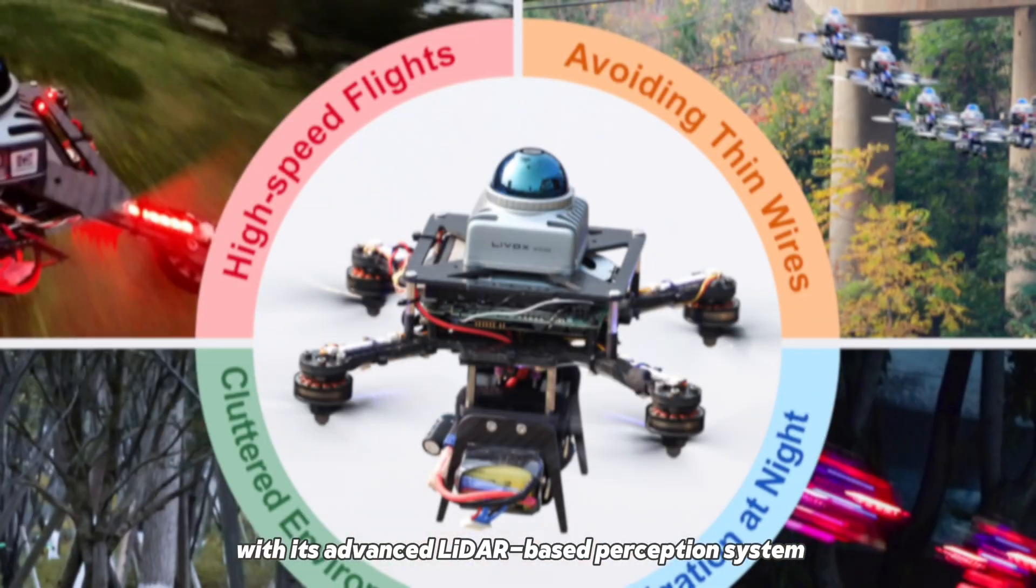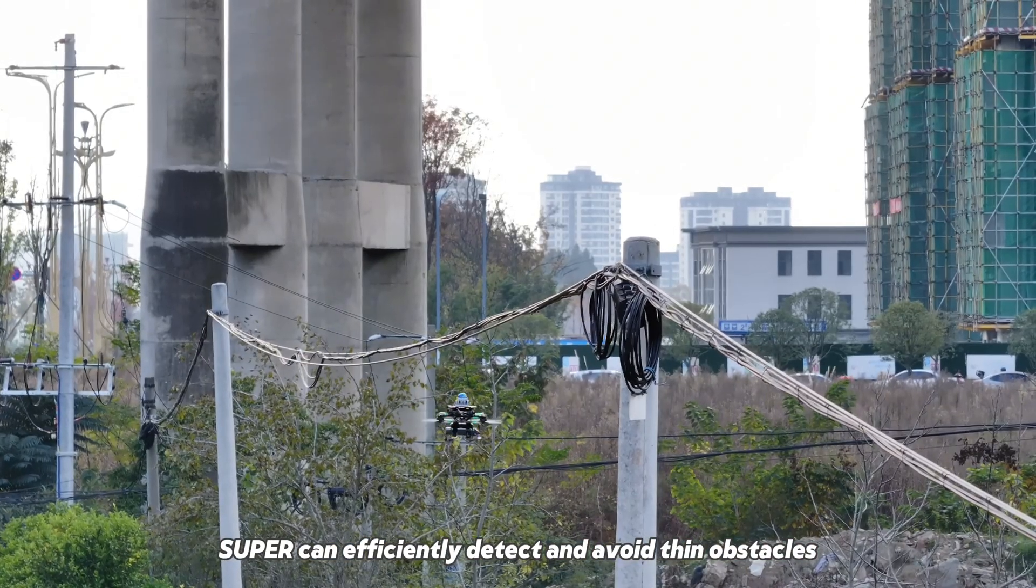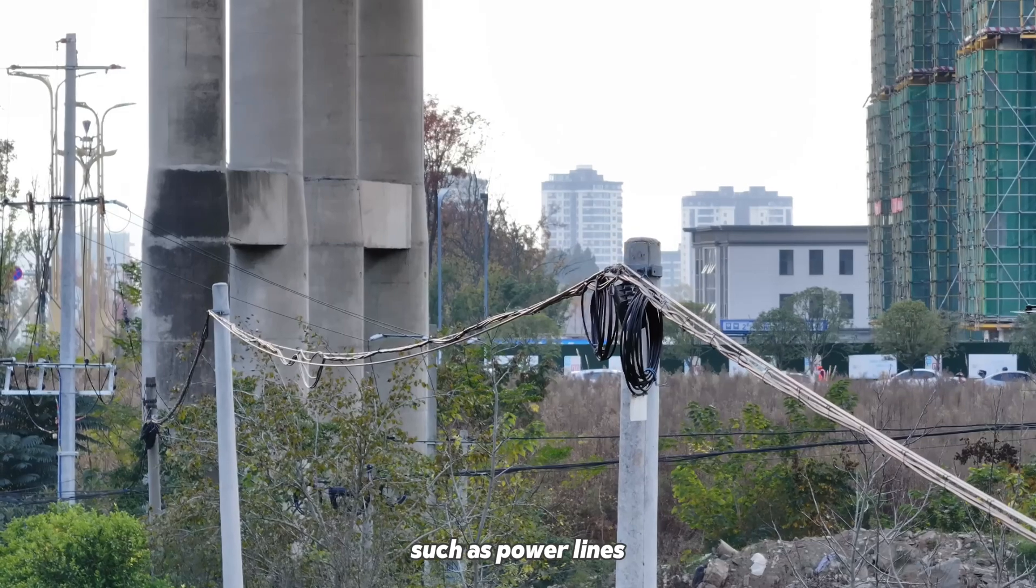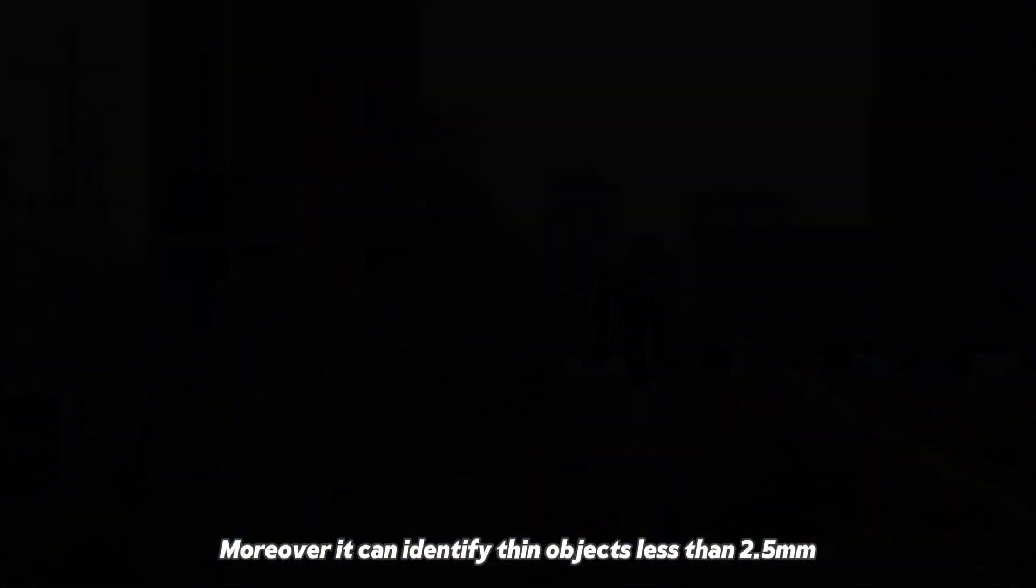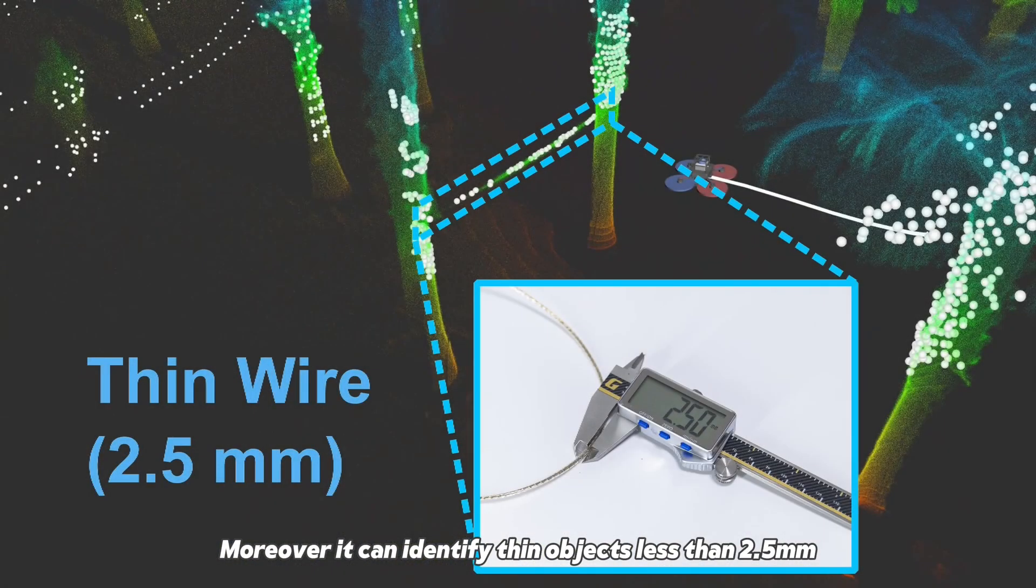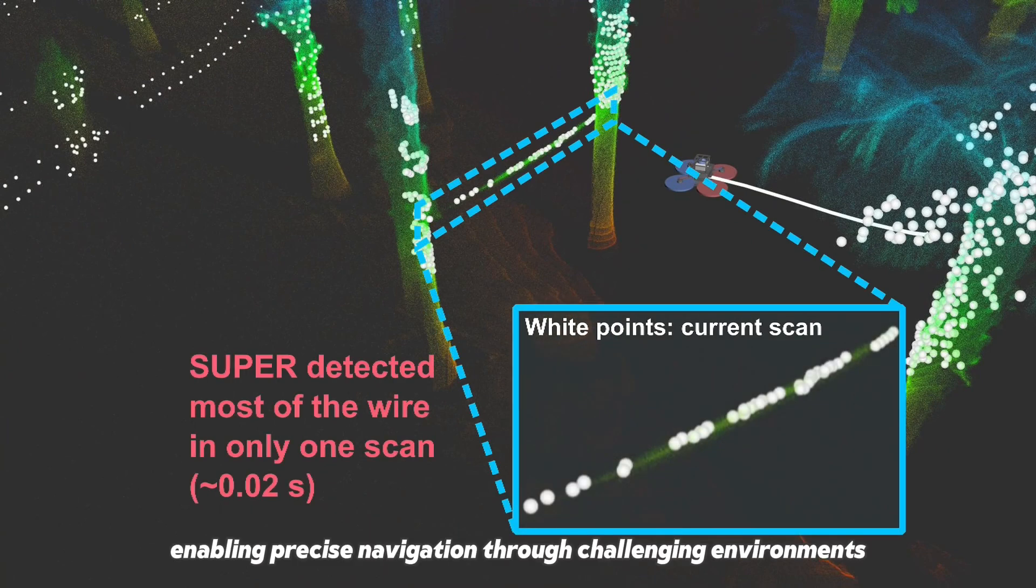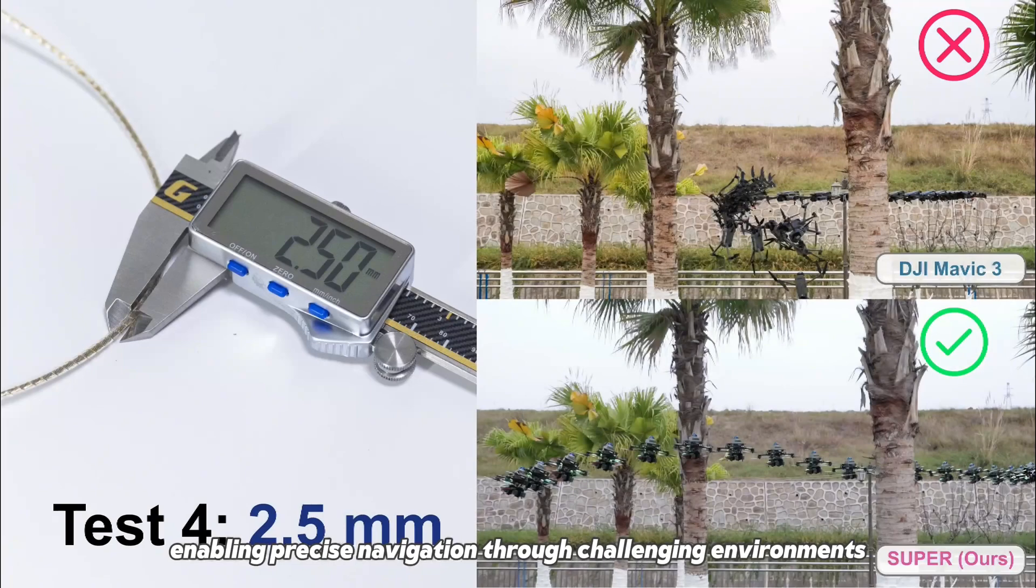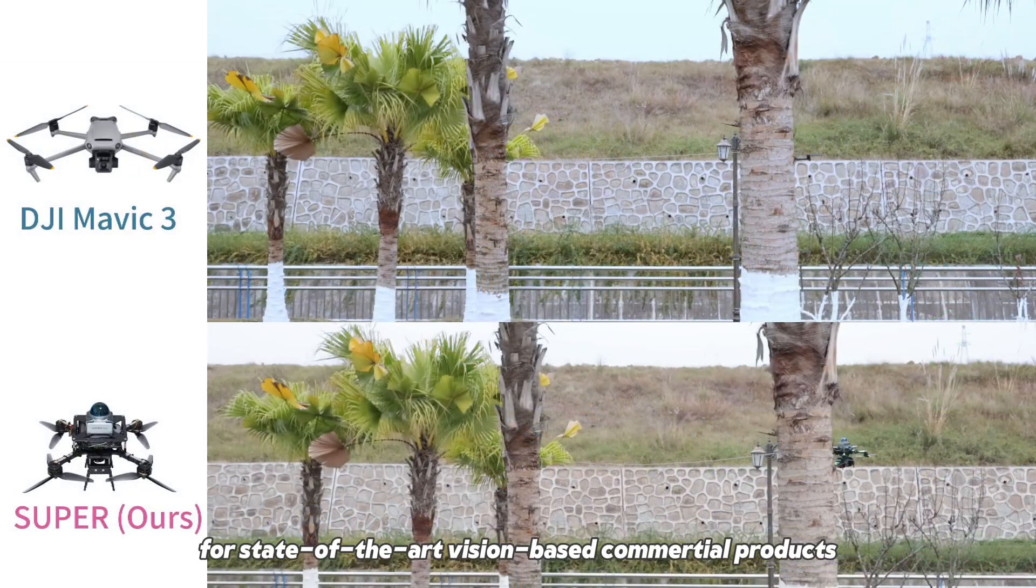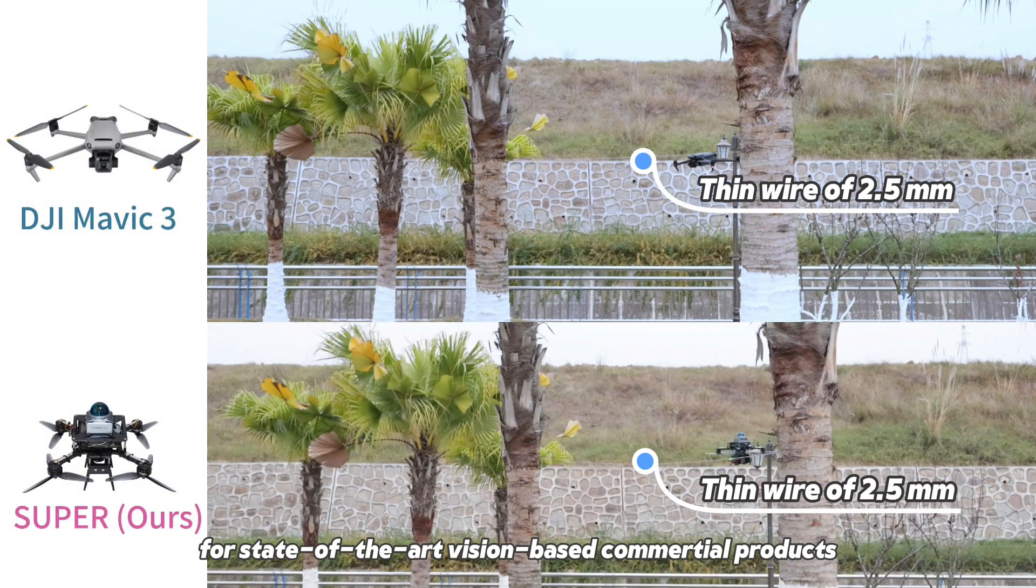With its advanced LiDAR-based perception system, Super can efficiently detect and avoid thin obstacles such as power lines. Moreover, it can identify thin objects less than 2.5mm in just 20ms, enabling precise navigation through challenging environments that pose significant difficulties for state-of-the-art vision-based commercial products.